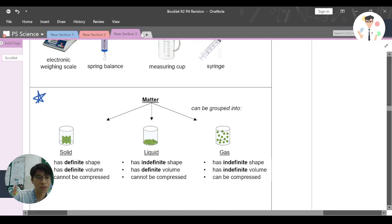Solid has a definite shape, means that you have an exact shape. It has a definite volume, we can count the volume. And solid cannot be compressed. That's basically about solid.